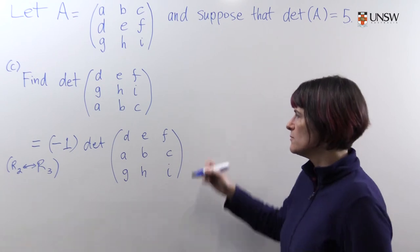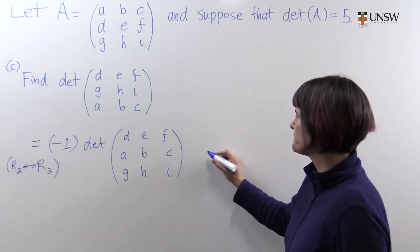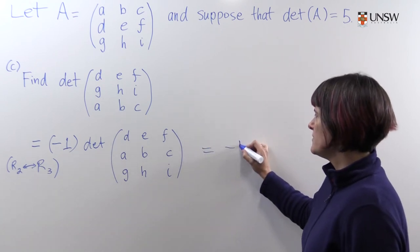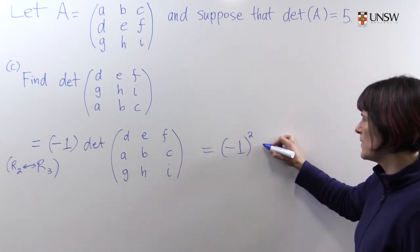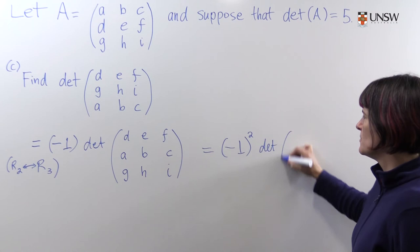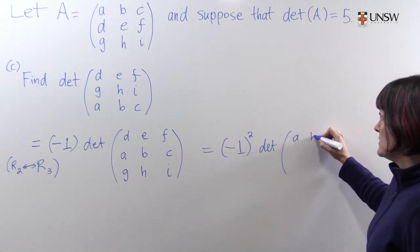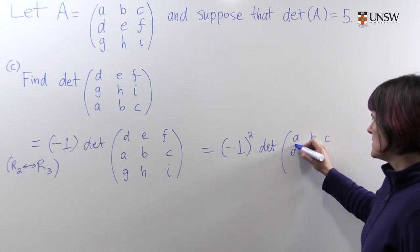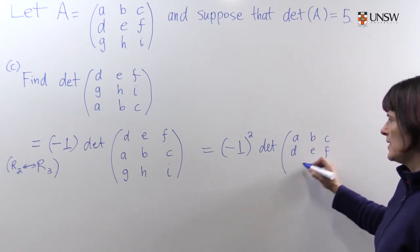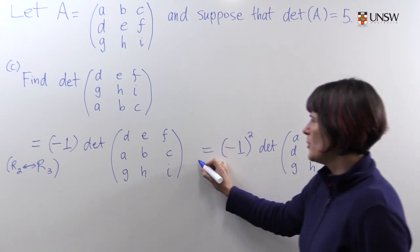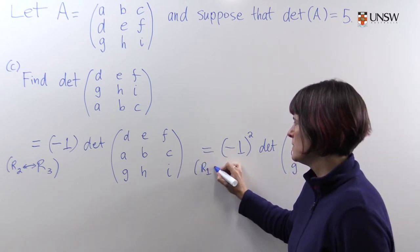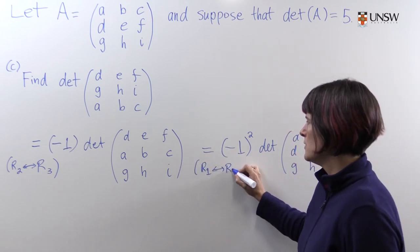Now we're going to exchange the first and second rows, which will give us A. So another factor of minus one comes out the front. I'll just keep that there as minus one squared, but you can already see what's going to happen here. So we get our matrix capital A.